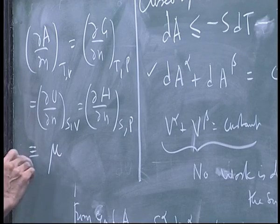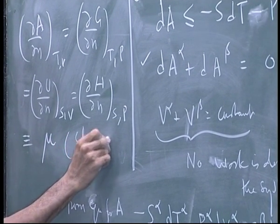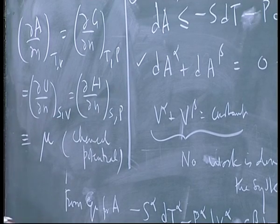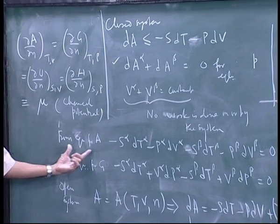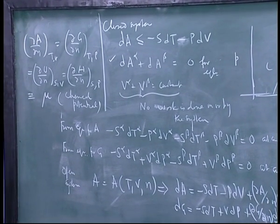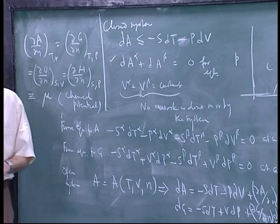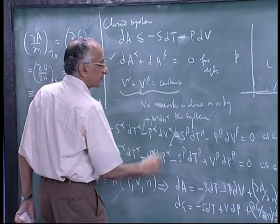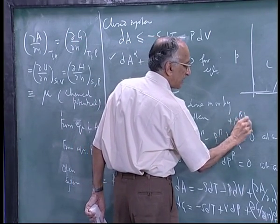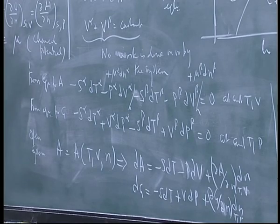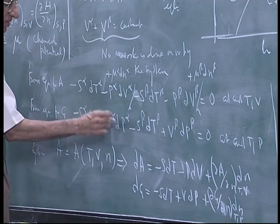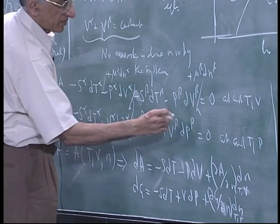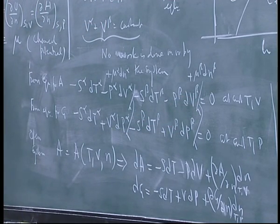This quantity comes up again and again, and for reasons that Gibbs intuited it was called the chemical potential μ. I will come back to why it is called the chemical potential. So when I write three lines here it is a definition. From the equation for A, you get dA equals minus S·dT minus P·dV plus μ·dN. So I will have to add plus μ_alpha·dN_alpha and plus μ_beta·dN_beta to both equations.